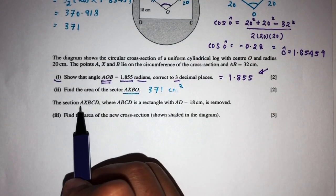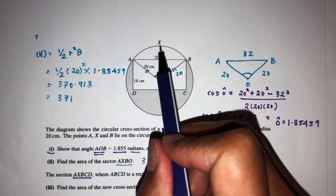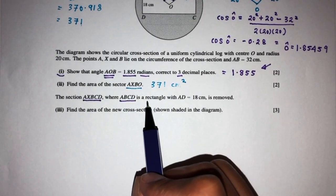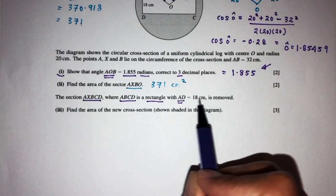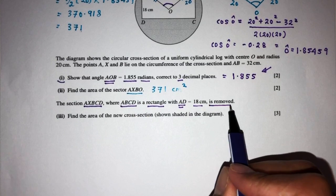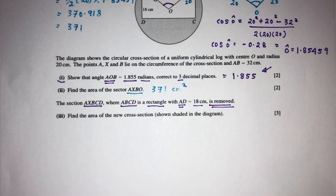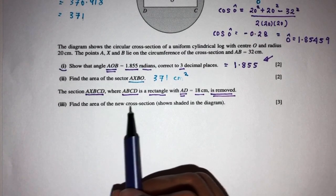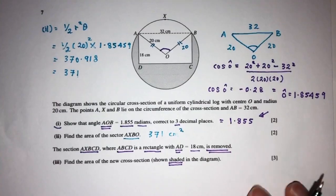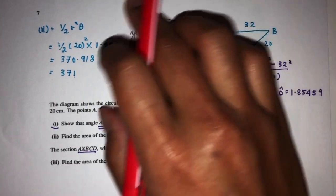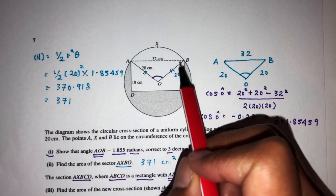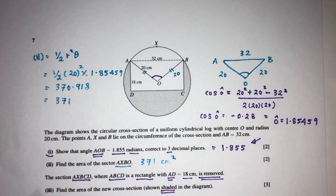Now, the section AXBCD — where ABCD is a rectangle with AD equal to 18 — has been removed. For part three, we have to find the area of the new cross-section shown as the shaded region. So we started with the whole circle, removed the rectangle and the segment shape, and we only need the area of the shaded region.